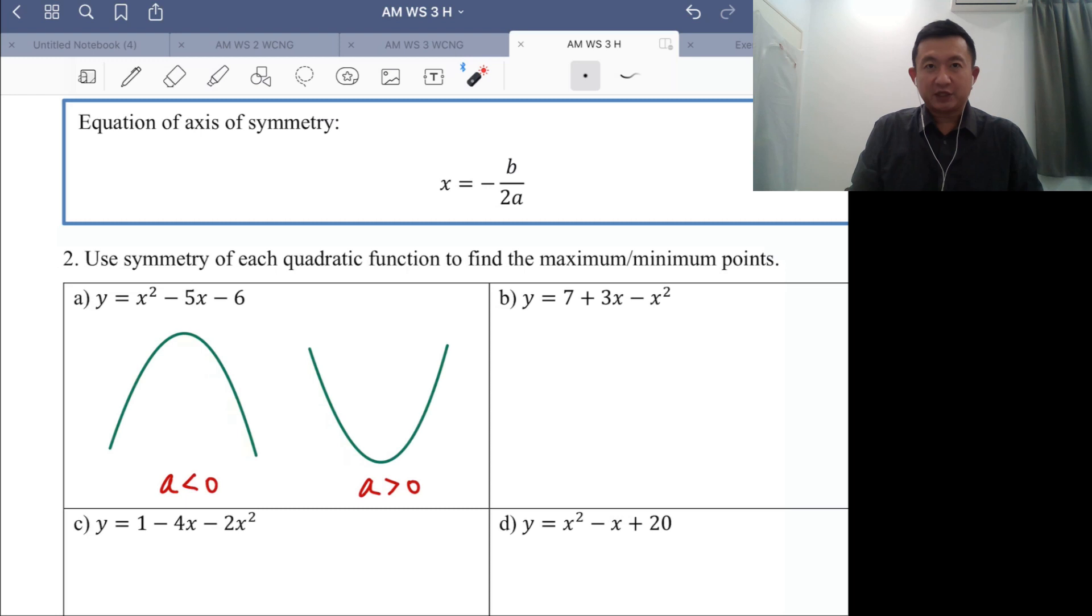Once you know that it's easier to solve this kind of question. We take 2a as the example: y equals x squared minus 5x minus 6.